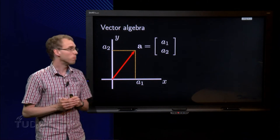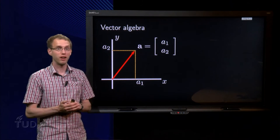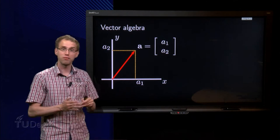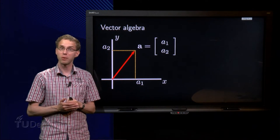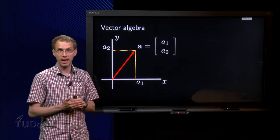Suppose we have a vector with two components, vector A. If we want to describe the vector we give both components, like this. A1 tells us how far we are going in the x-direction, and A2 telling us how far we are going in the y-direction, and the red arrow over here is the vector A.